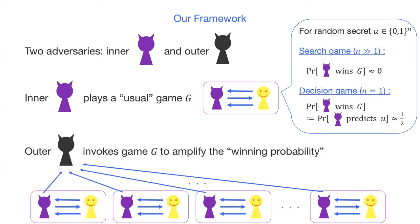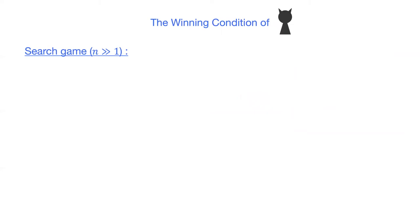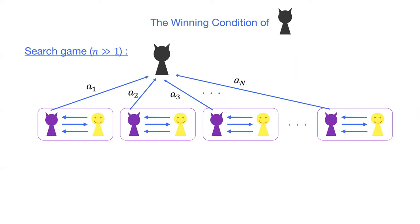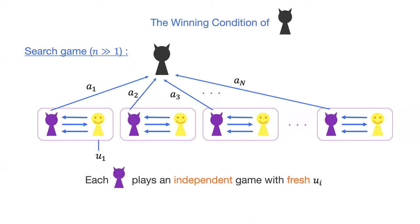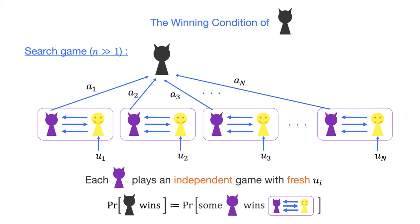The task of the outer adversary is to invoke the local game G many times to amplify the winning probability. For the search game, the outer adversary collects information from the inner adversaries, where each inner adversary plays an independent game with fresh randomness U_i. The winning condition of the outer adversary is that there is some inner adversary who wins the local game. So, the task of the outer adversary is to invoke inner adversaries sufficiently many times so that some inner adversary wins the local game.